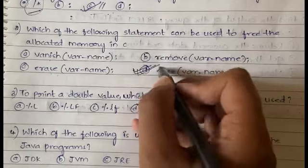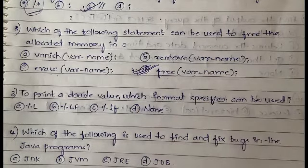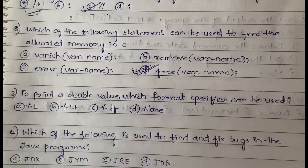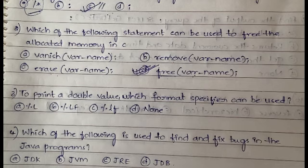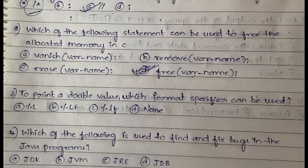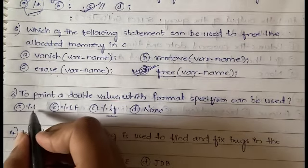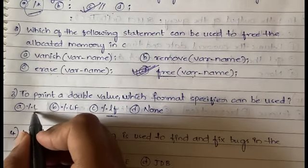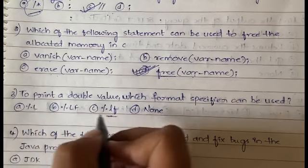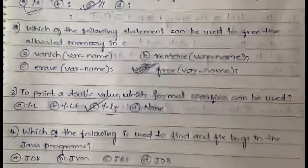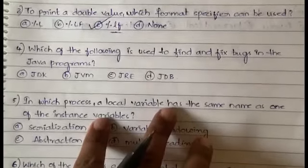To print a double value, which format specifier can be used? Among the different format specifiers, in order to print a double value we use percent lf in lowercase. Generally we don't get uppercase letters in format specifiers, we use only small letters. For double we use percent lf.